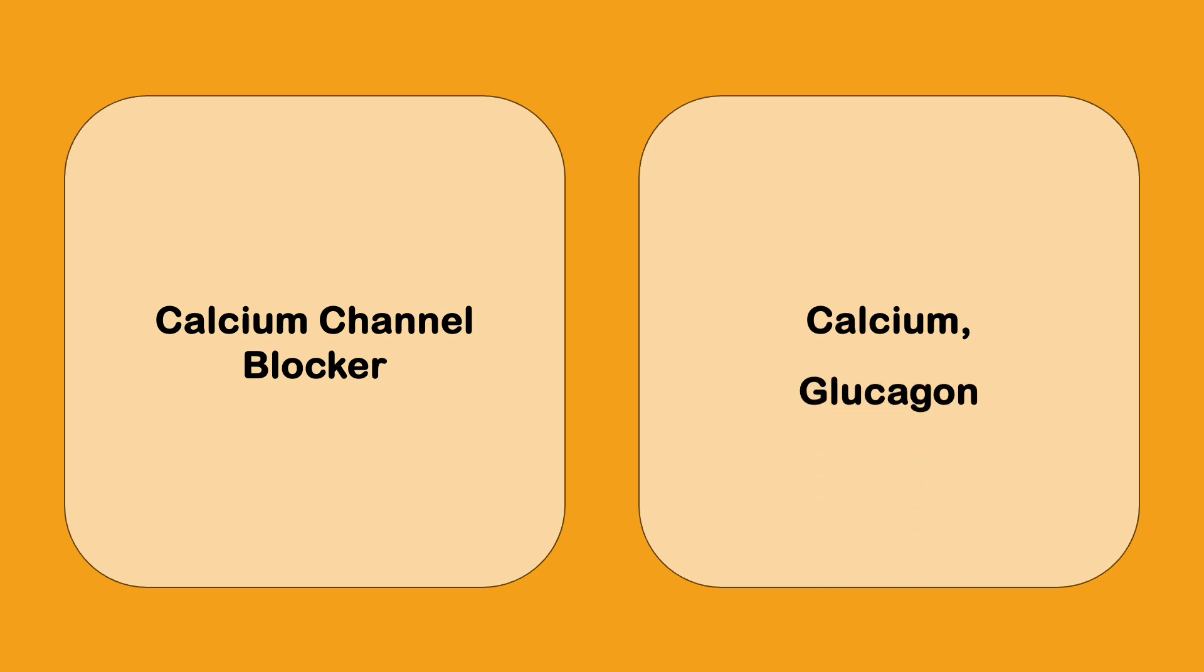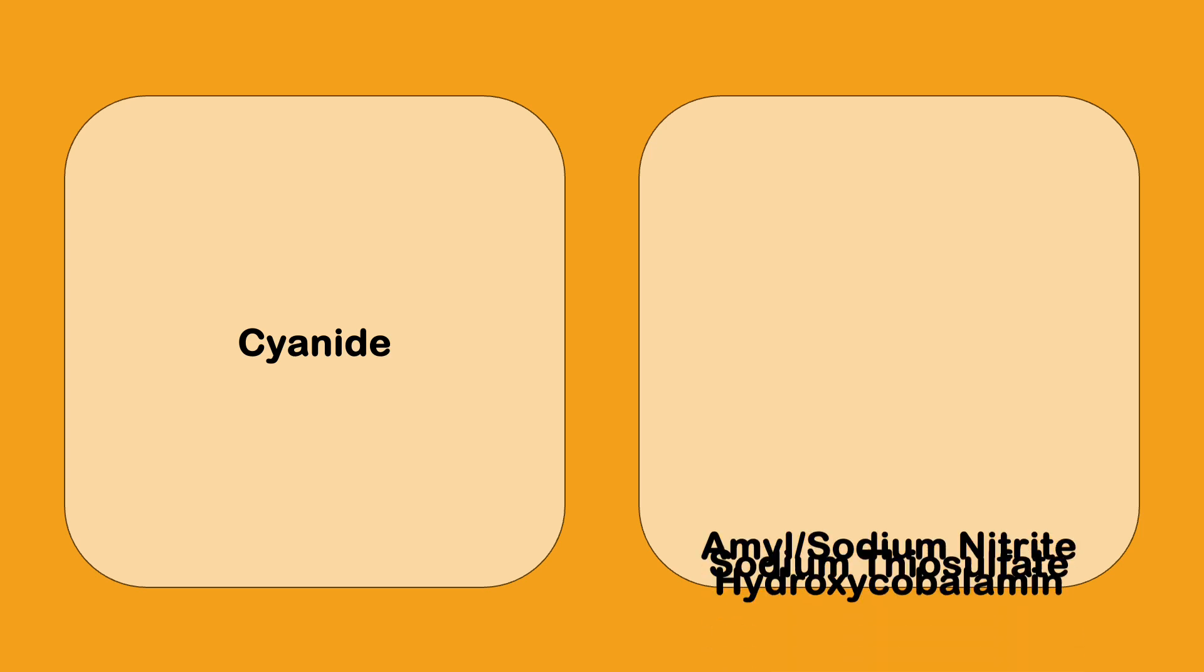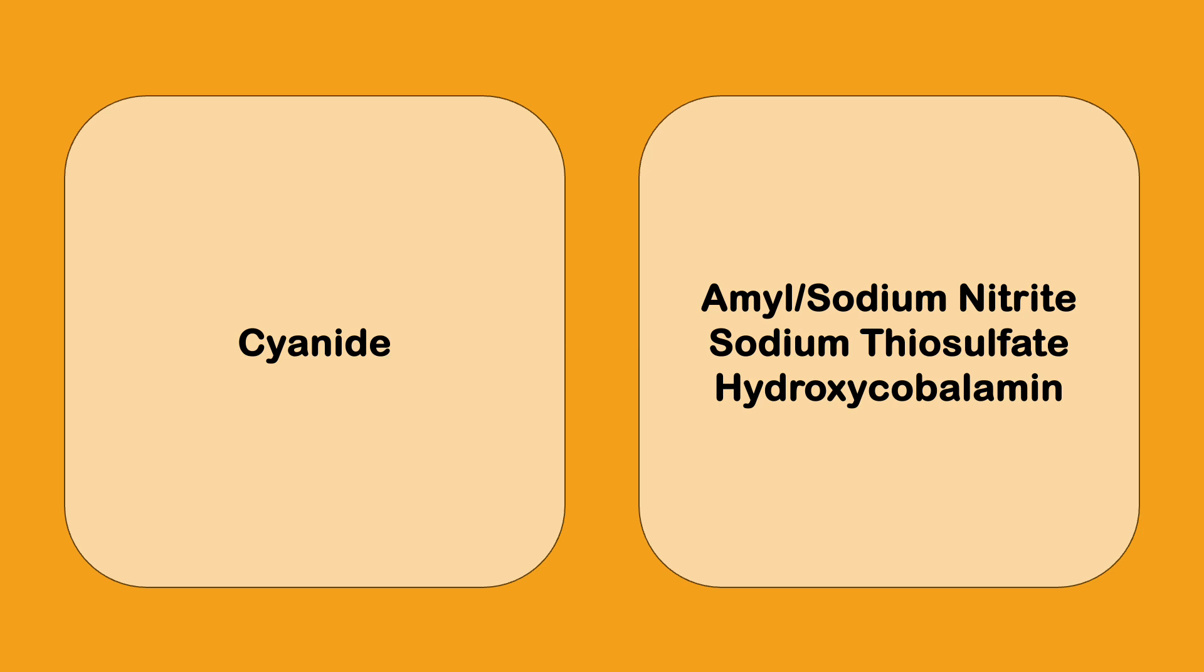Carbon monoxide, it's very simple, you give them high flow oxygen. Or if they have undergone seizures or arrhythmias or comatose, patient will have to go for hyperbaric oxygen. Cyanide toxicity, any house fires will lead to carbon monoxide plus cyanide toxicity.